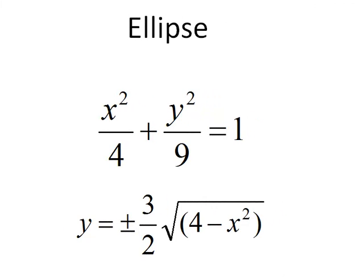Now we'll graph the ellipse, which is another conic section. The equation we'll use is x squared over 4 plus y squared over 9 equals 1. The center of this ellipse will be at the origin. But in order to graph it, since it's not a function, we'll actually find the equation for the upper half and the lower half. Here we see the equation plus or minus 3 halves times the square root of 4 minus x squared.